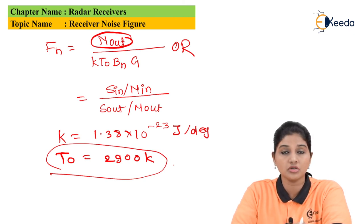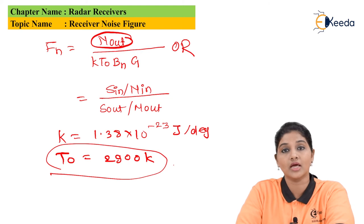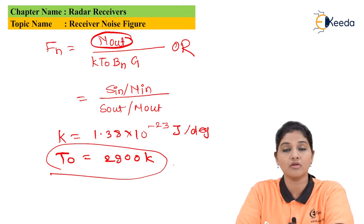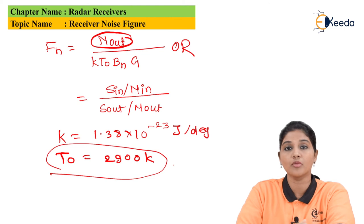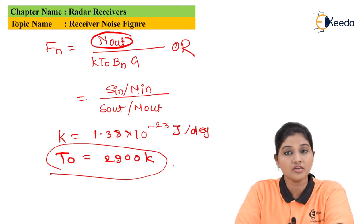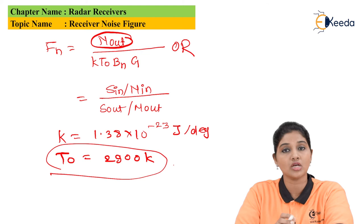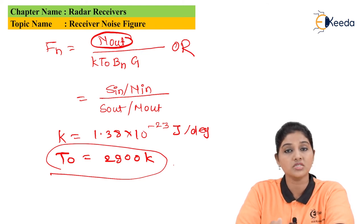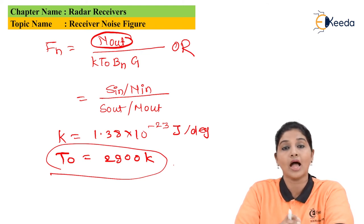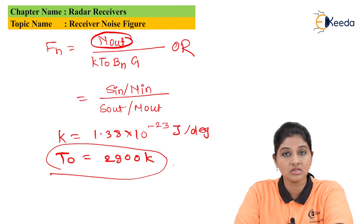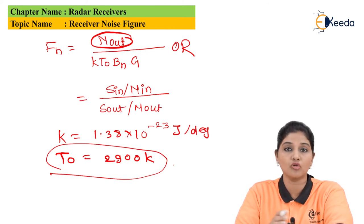The first interpretation is that there is a degradation in the signal-to-noise ratio as the signal travels from input to output. The second interpretation is the ratio of actual noise output power of the actual load to the noise output power of the ideal load, which amplifies the signal or the thermal noise, with no additional noise added to the system.